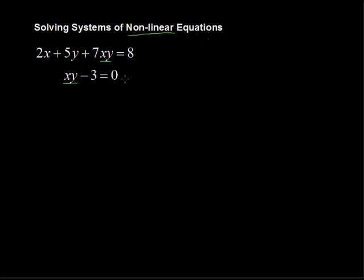We'll solve this using substitution. We will take one of the equations and solve for one of the variables, and then plug that expression in for that variable in the other equation. We'll solve this bottom equation for y. So we'll add 3 to each side, and we get xy equals 3, and then we'll divide each side by x, and so you get y equals 3 over x.